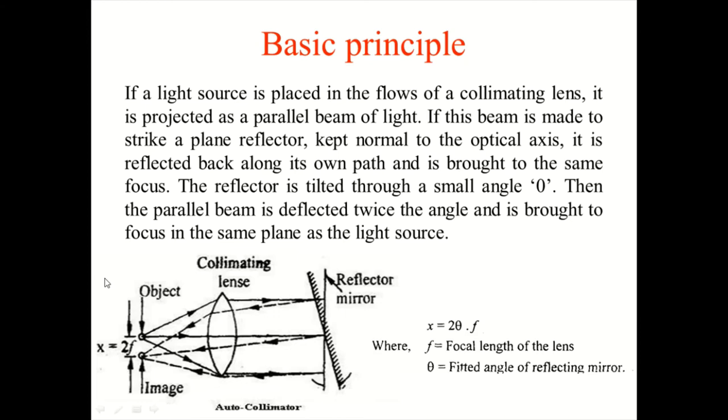If the beam is made to strike a plane reflector kept normal to the optical axis, it is reflected back along its own path and is brought to the same focus. The reflector is tilted through a small angle theta, then the parallel beam is deflected twice the angle and is brought to focus in the same plane as the light source.